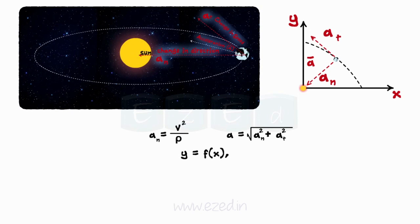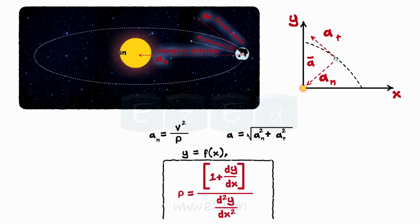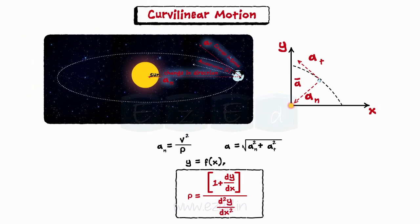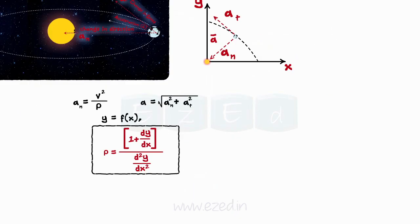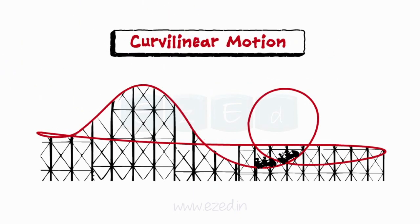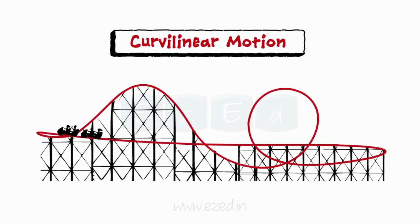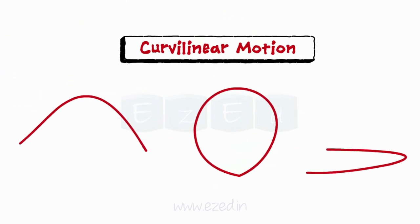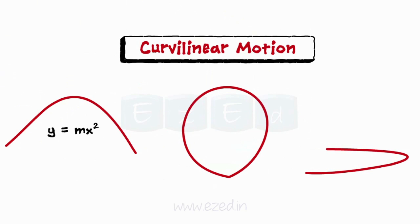In curvilinear curves, the path is defined as a function and the radius of curvature is given by the following formulae. In curvilinear motion, the path of the particle is expressed as a mathematical expression. Here are the different types of curves which particles can perform.